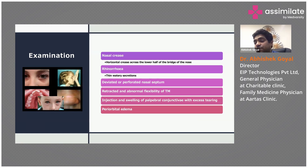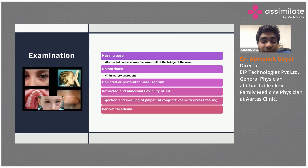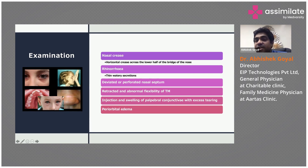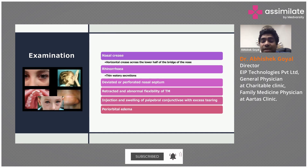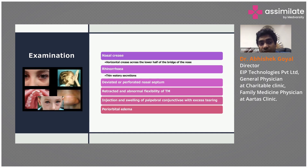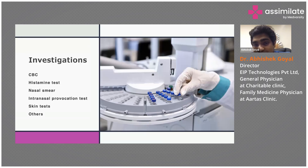On physical examination, as a general physician you will find a nasal crease, which is caused by the patient frequently wiping a runny nose. There will be thin watery secretions. With a scope or torchlight you may see a deviated or perforated nasal septum, abnormal flexibility of the tympanic membrane, redness of the conjunctiva, flushing of the eyes, and periorbital edema.